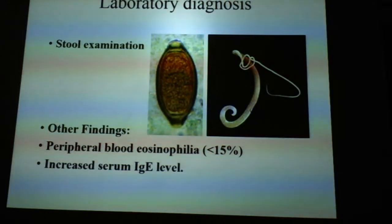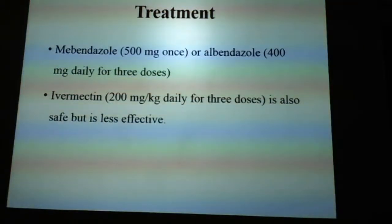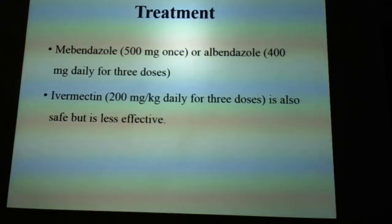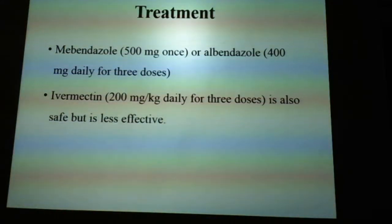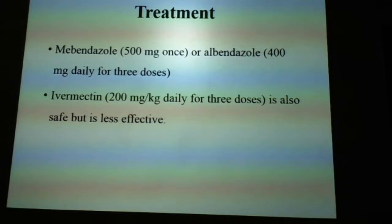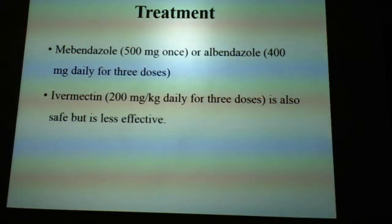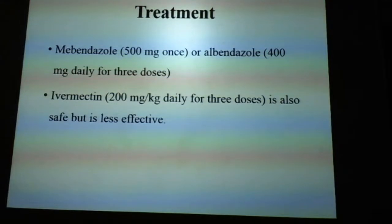The increased serum IgE level is mainly because of the allergic response of the host. For treatment, we can give mebendazole 500 mg once, or albendazole 400 mg daily for 3 doses. Albendazole can also be given at 200 mg per kg daily for 3 doses, which is safe but less effective. Usually we prefer albendazole or mebendazole.